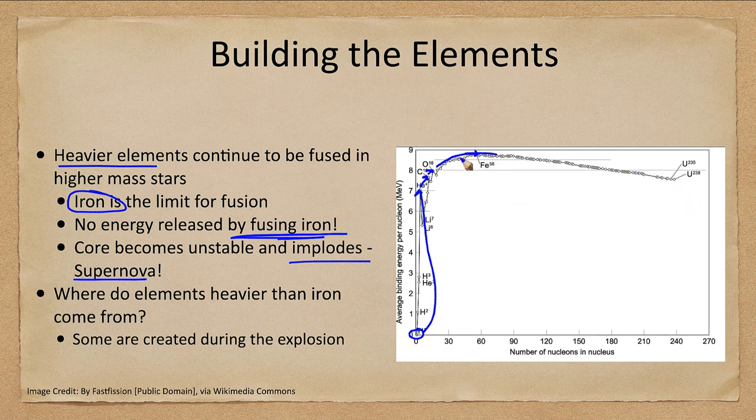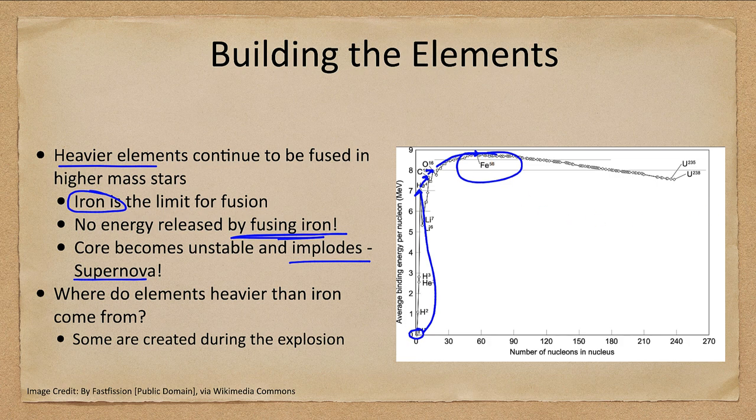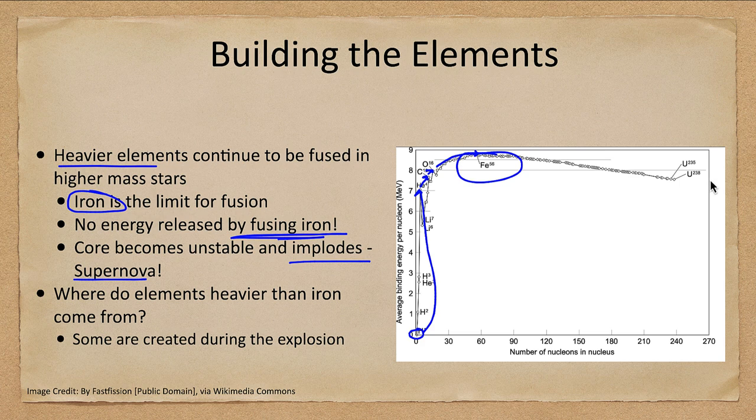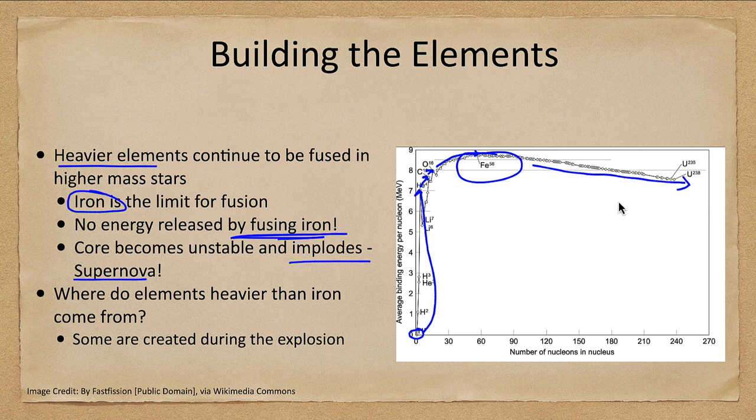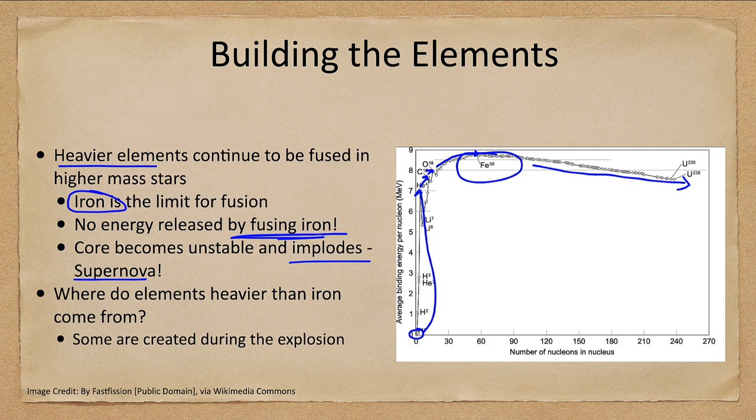So iron-56 is as high as you can possibly get within a star by fusion. To get any other heavier element we need a lot of energy to produce these because they cannot be produced by nuclear fusion in a star. So where do these heavier elements come from?